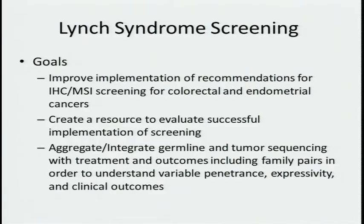We also thought we would tag along a mini-pilot discovery. So there's implementation, evaluation, and a little discovery. That is: can we aggregate or integrate germline and tumor information with treatment and outcomes, including maybe surveillance, with family pairs in order to understand the variable penetrance, expressivity, and clinical outcomes? Gail's point here is that individuals from the same family, or individuals with identical germline mutations, can have different phenotypes, both in general as well as in the somatic phenotypic outcome.